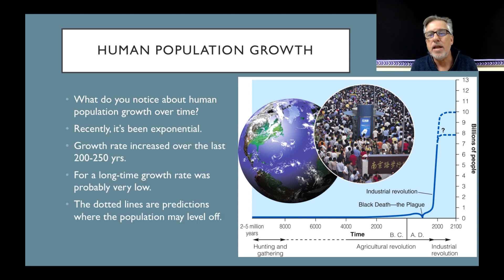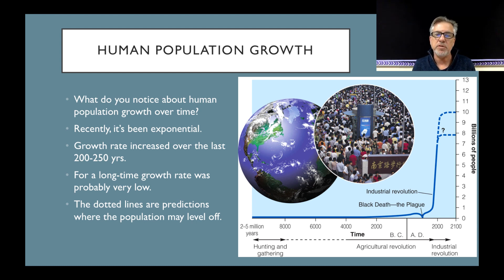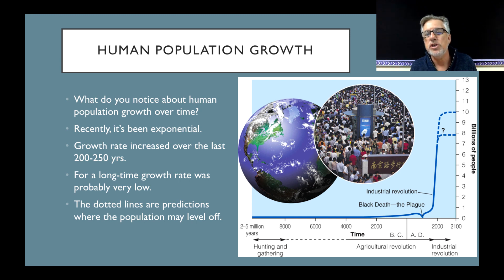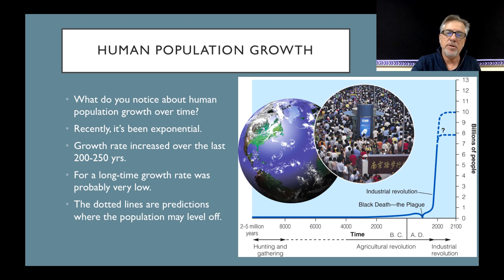The dotted lines in this graph are predictions of where the population may level off. This graph was made around 2005 or 2006. The most optimistic scenario was under 8 billion, and we are now about 7.5 billion, so that scenario doesn't look like it's going to happen. Other people predicted around 10 billion, so we'll talk about that more in a few minutes.